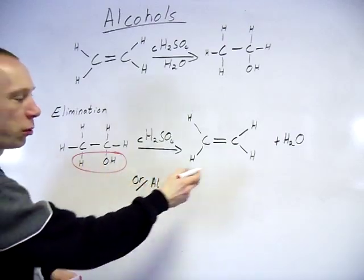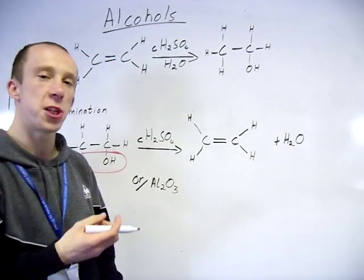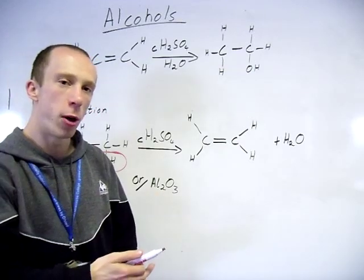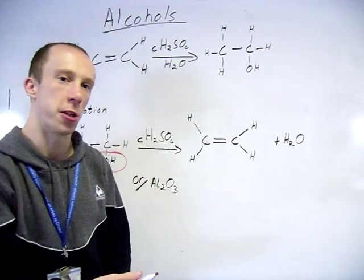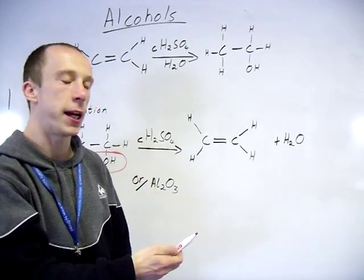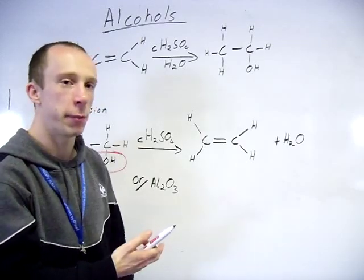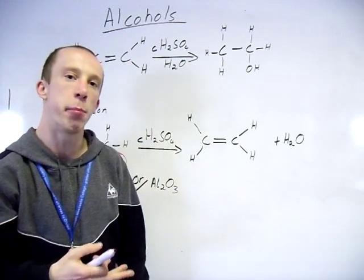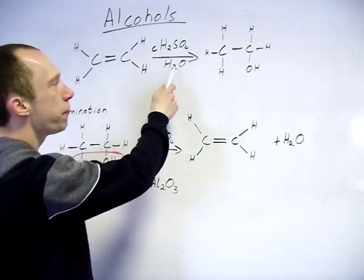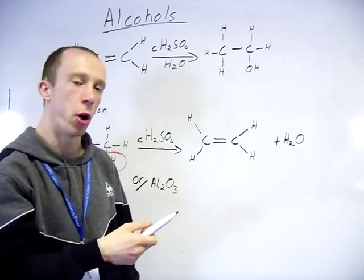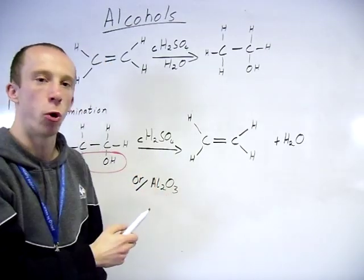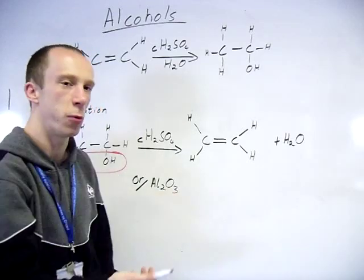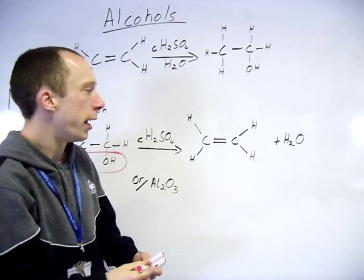Now you can use aluminum oxide instead if you want. Just heat this up, pass it over as a vapor, it will do the same thing. I tend not to bother telling people to remember that - this is far easier. So the concentrated sulfuric is there both times. If you've got water, then you will hydrate your double bond. If you do not have water, you will dehydrate your alcohol. A bit easier to remember, one less thing to remember.